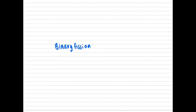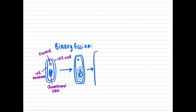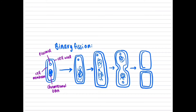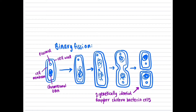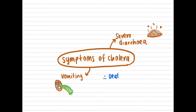This bacterium reproduces through the asexual method of binary fission, which involves: one — DNA replicates; two — the bacterium cell elongates; three — organelles move to opposite sides; four — the cell wall pinches in the middle forming a cleavage; five — cytokinesis splits the cell, producing two genetically identical daughter cells. This causes symptoms of severe diarrhea with a fishy odor and vomiting, which leads to death from dehydration.